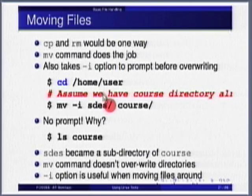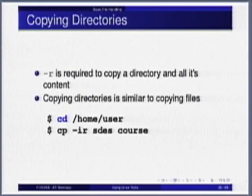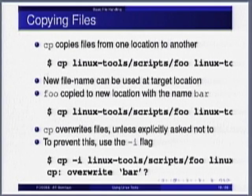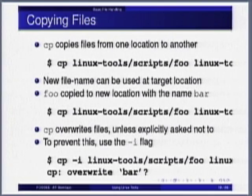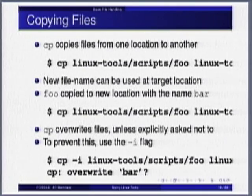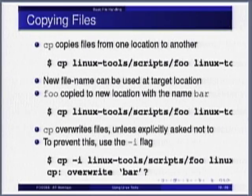Let us come back and see what else about moving files, copying files, and removing. When you are copying, -r is the option for recursive. -i option, if you want to be asked interactively whether you really want to overwrite or not. -i for interactive — while moving it means overwrite, while removing it will ask you whether you really want to remove. -i option works the same way for all three: cp, mv, rm.